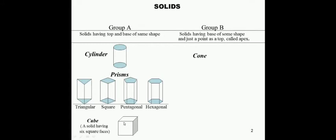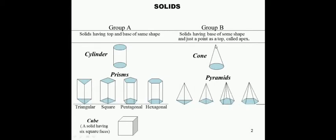In Group B, the first type of solid is the cone. This is the base of the cone, and here is the apex. Another type of Group B solid is pyramids. Pyramids are classified into different types: triangular, square, pentagonal, and hexagonal.